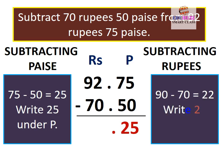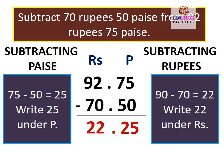Subtracting rupees: 92 minus 70 is equal to 22. Write 22 under rupees.